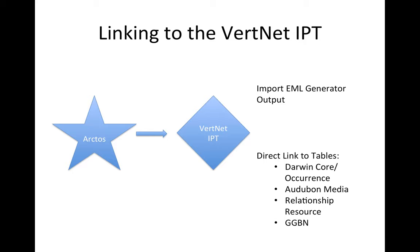From the IPT, data goes out to the other aggregators. There are people who think that when we publish a dataset it goes into the VertNet portal and then elsewhere — that's not the case. It goes into the Integrated Publishing Toolkit software. We take the EML generated by the Arctos EML generator and manually upload it into the IPT, then link all of those tables — created in Arctos behind the scenes — directly to the IPT instance. So we do some manual integration and a lot of automated linking to the Arctos database directly.